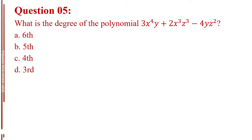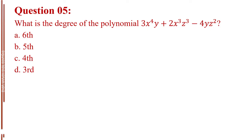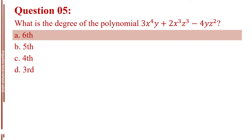Question number five. What is the degree of the polynomial 3x to the power of 4y, plus 2x to the power of 3z to the power of 3, minus 4yz to the power of 2? Letter A, 6th. Letter B, 5th. Letter C, 4th. Letter D, 3rd. The answer is Letter A, 6th.